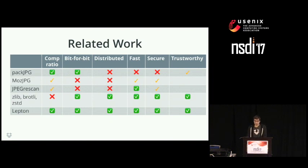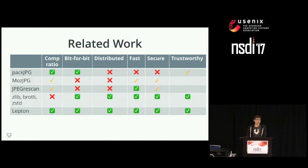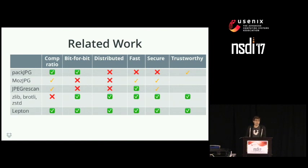Looking at prior work, PackJPEG leads with a compression ratio of about 22-23% and is bit-for-bit accurate. However, it doesn't work in a distributed manner on a small substring of a JPEG, and it's not nearly fast enough for our purposes. MozJPEG and JPEG Rescan get appreciable compression ratios but don't attain bit-for-bit accuracy — they preserve RGB values but not the actual JPEG structure like its headers. Zlib, Brotli, and Zstandard do meet all of our requirements and we use them, but they don't have nearly enough compression ratio, getting most of their savings from the header rather than the actual image data.